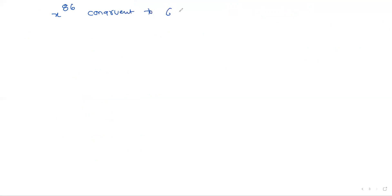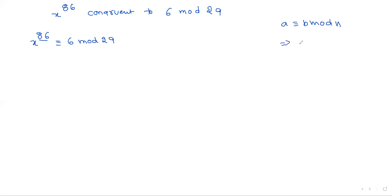Now consider one more example: x^86 ≡ 6 (mod 29). So x^86 = 6 mod 29. We represent 86 in terms of 29: 86 = 29×2 + 28. Using the property a ≡ b (mod n) means a mod n = b mod n.